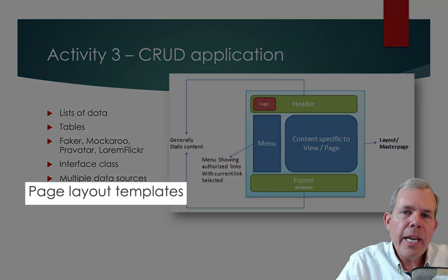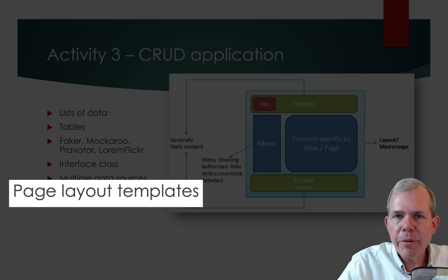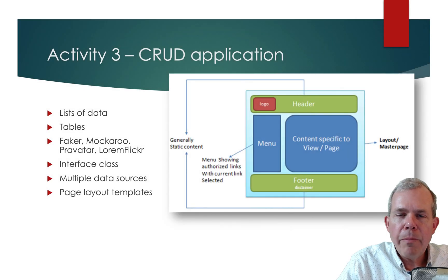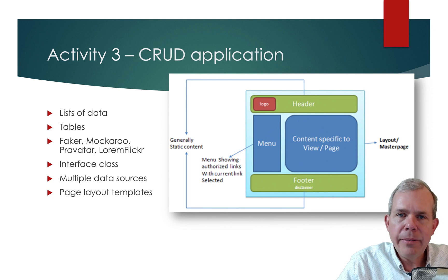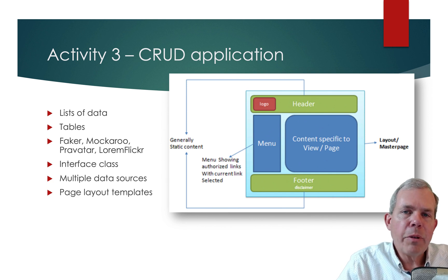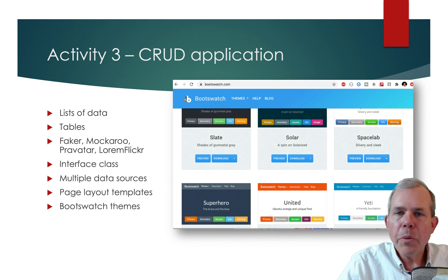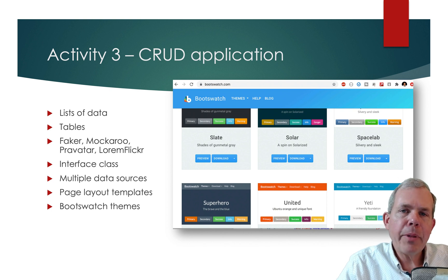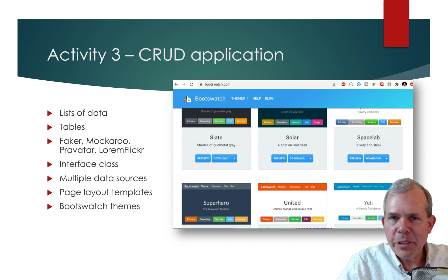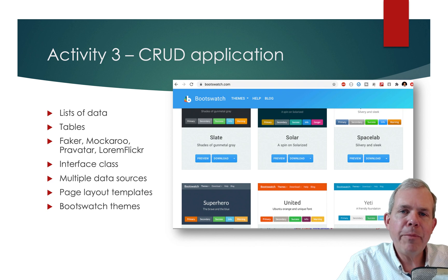Following that, we're going to look at a layout. The default application created for you has a header, a footer, and a body. We're going to identify where those boundary lines are using some CSS statements. Also we're going to modify the existing look. By default, an application in ASP.NET uses Bootstrap, so all applications pretty much look the same because they're all styled with the same library.